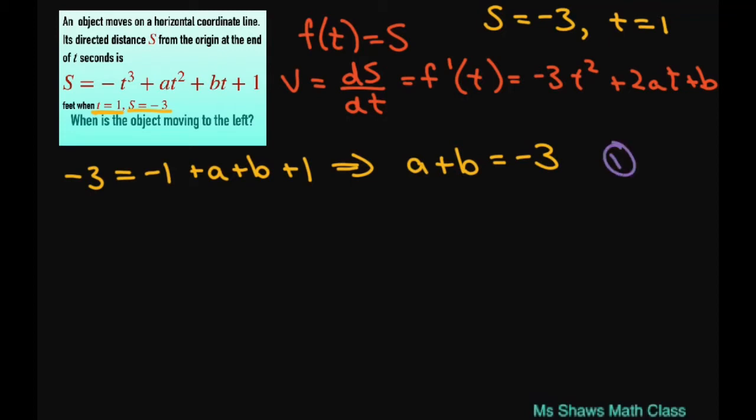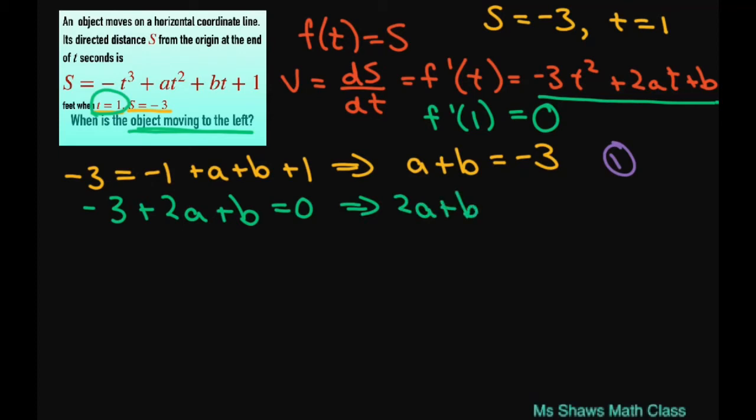Since we have our derivative here, we can look at f'(1), because t is 1. We want that to be 0, because we're trying to find when it changes directions. Setting that up, we have negative 3 plus 2a plus b equals 0, or we can write this as 2a plus b equals negative 3.